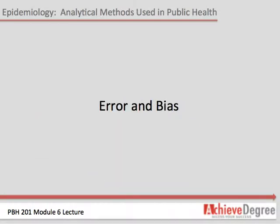There are different types of analytic studies. They have specific purposes, require varying levels of resources to conduct, and they raise different ethical issues. Epidemiologists have to choose which design is most appropriate for each case they investigate. They have to take into account the potential for error and bias each one entails, as well as the resources available. First, we'll look at different types of error and bias. Then, we'll examine the various types of studies and how each eliminates potential error and bias.